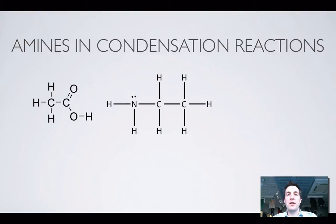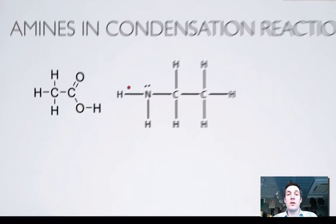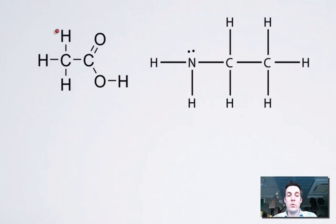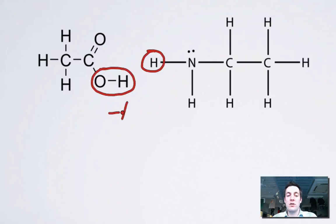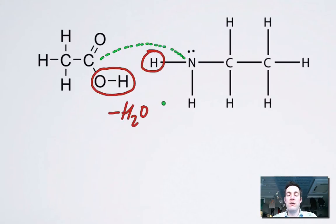Let's first look at how amines are involved in condensation reactions. In condensation reactions before, we had an alcohol reacting with a carboxylic acid — the carboxylic acid lost its OH and the alcohol lost its H. We're still going to lose water, which is why this is called a condensation reaction. But in this case, instead of forming a new bond between the carbon of the carboxylic acid and the oxygen of the alcohol, we're now forming the bond between that carbon and the nitrogen of the amine.